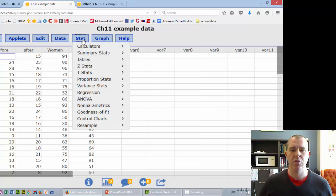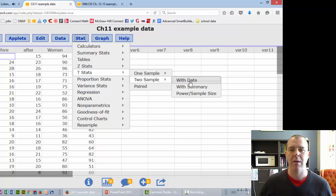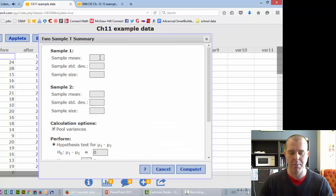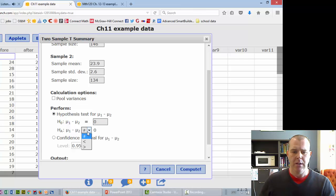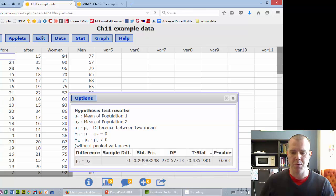So we are going to do t-stat now, two sample with summary. We don't have the raw data here. Sample mean 22.9, 2.4 sample standard deviation, we had 146 students. Sample mean 23.9, standard deviation 2.6, sample size 134. We'll talk a little bit about this pool of variances. We want to uncheck that. We'll talk a little bit about what that means. And it was a not equal to, right. So compute, pretty small p-value there.